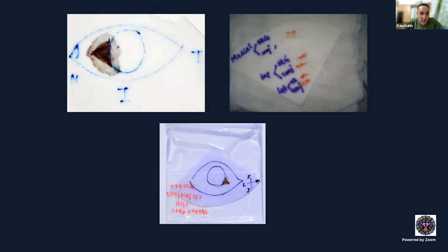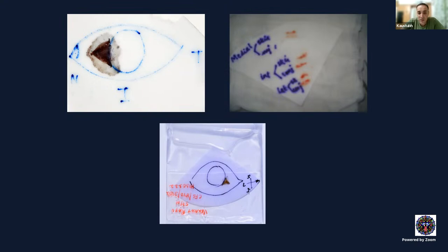For ocular surface neoplasia specimens, place the tissue on filter paper, allow it to dry, then put it in formalin. This prevents the margins from rolling over each other, making it easier to orient and sample margins separately. Alternatively, margins can be sent separately from the main tissue. The entire filter paper is placed in a polythene bag with preservative, labeled, and sent to the lab.